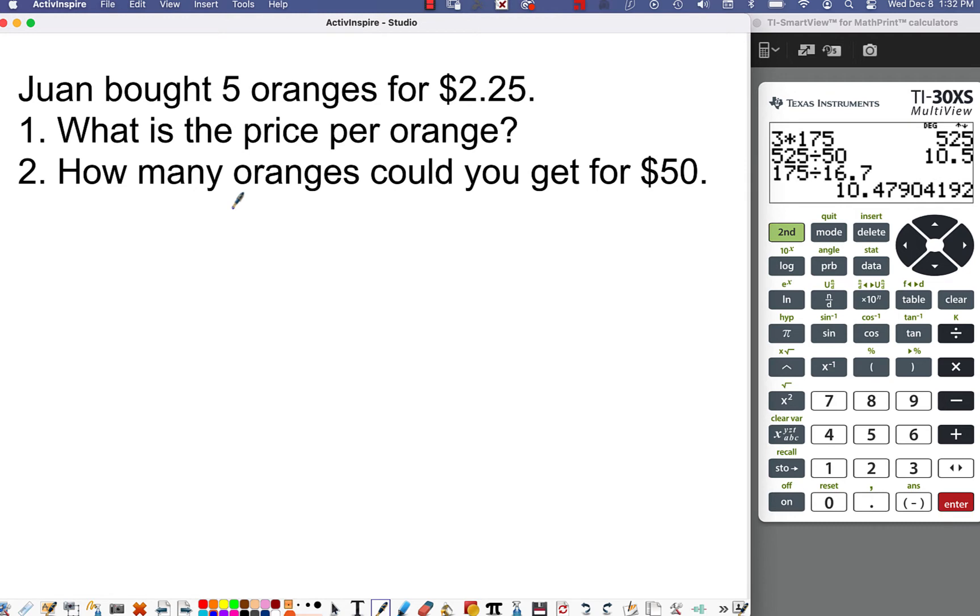So here we go. Juan bought five oranges for $2.25. What is the price per orange and how many oranges could he get for $50? So again, we want the price per orange. So price on top, there's your per, and here's orange. So the number of oranges, we'll put oranges here. So the price goes on top is $2.25 divided by five. That will give us the number that it's going to cost per one orange.